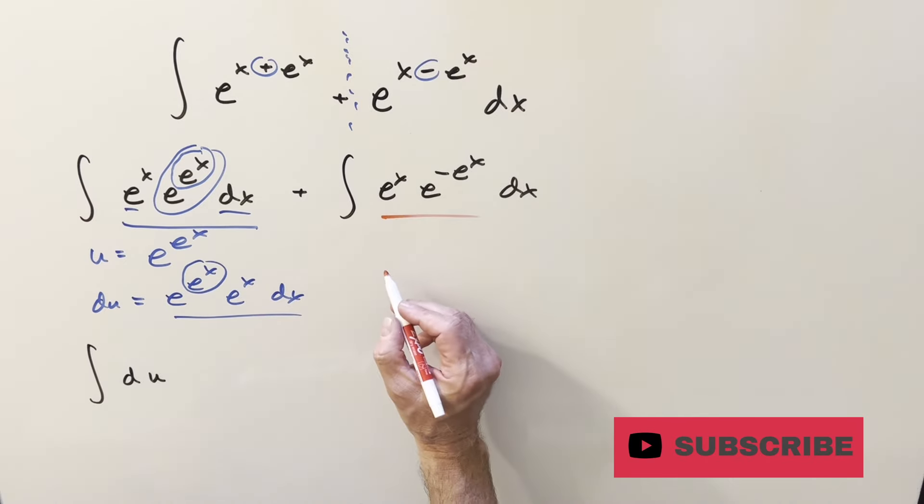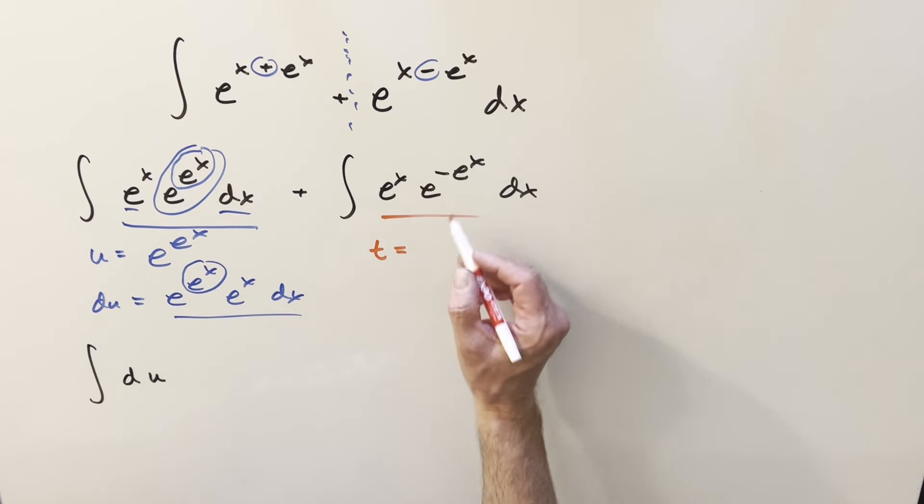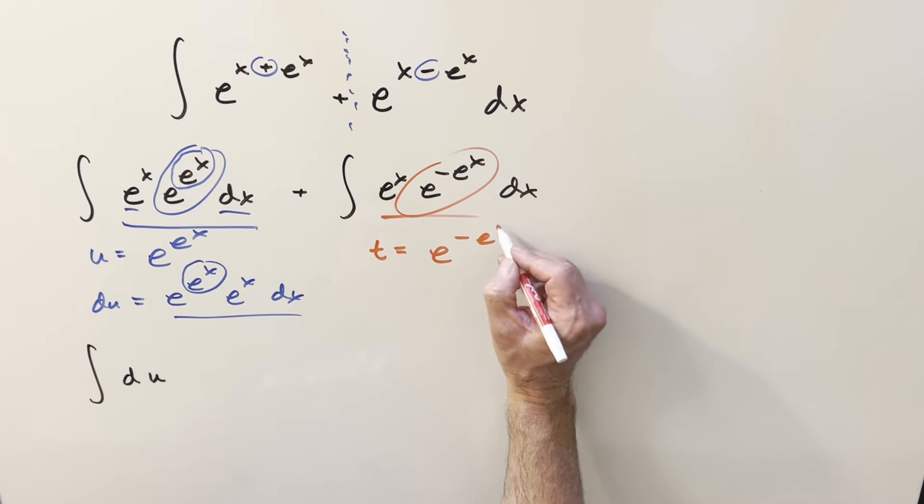Then same kind of thing on this second one, just that we've got a minus sign that makes it a little bit different. But I want to try to save a step and substitute for the whole thing. So we're going to do t equal to e to the minus e to the x.